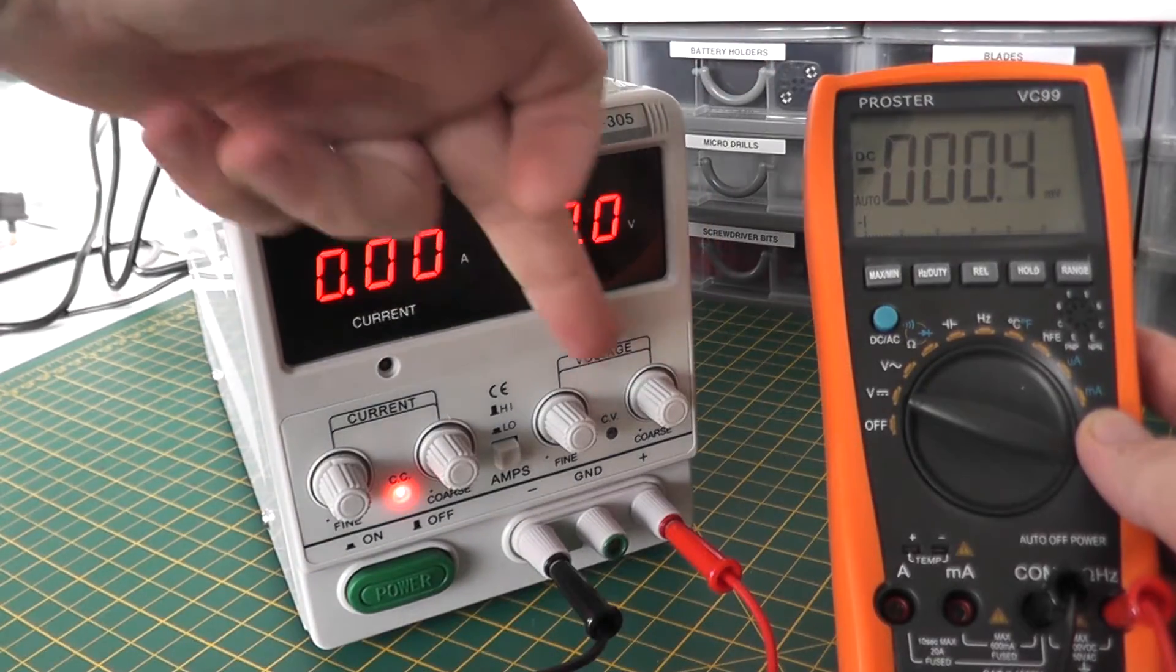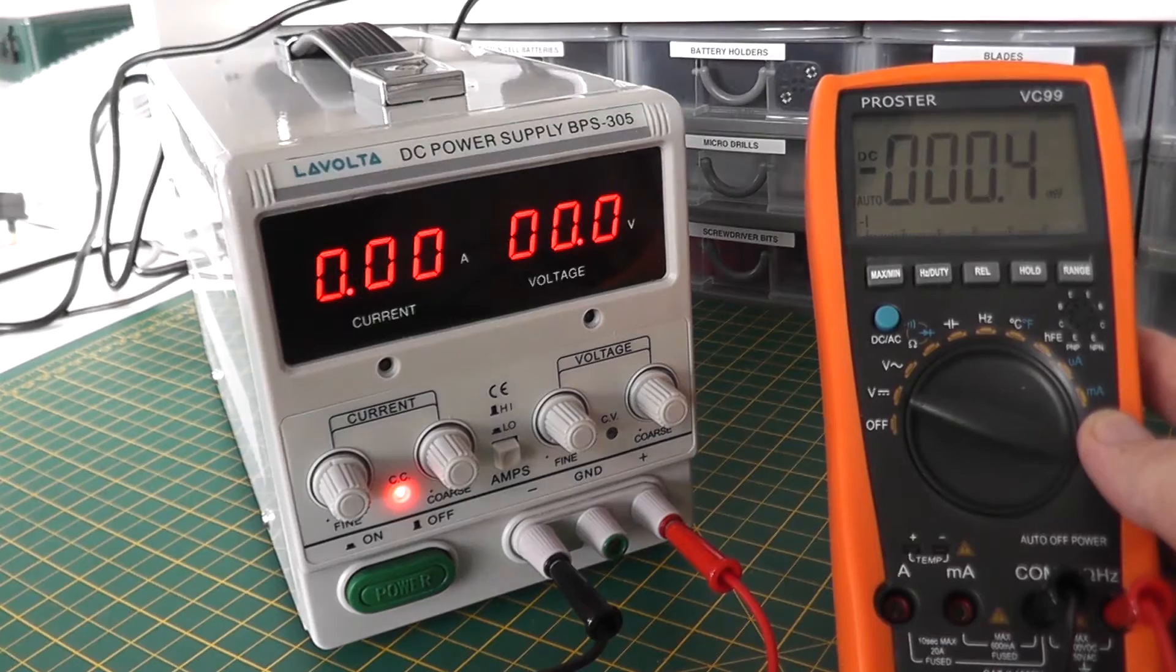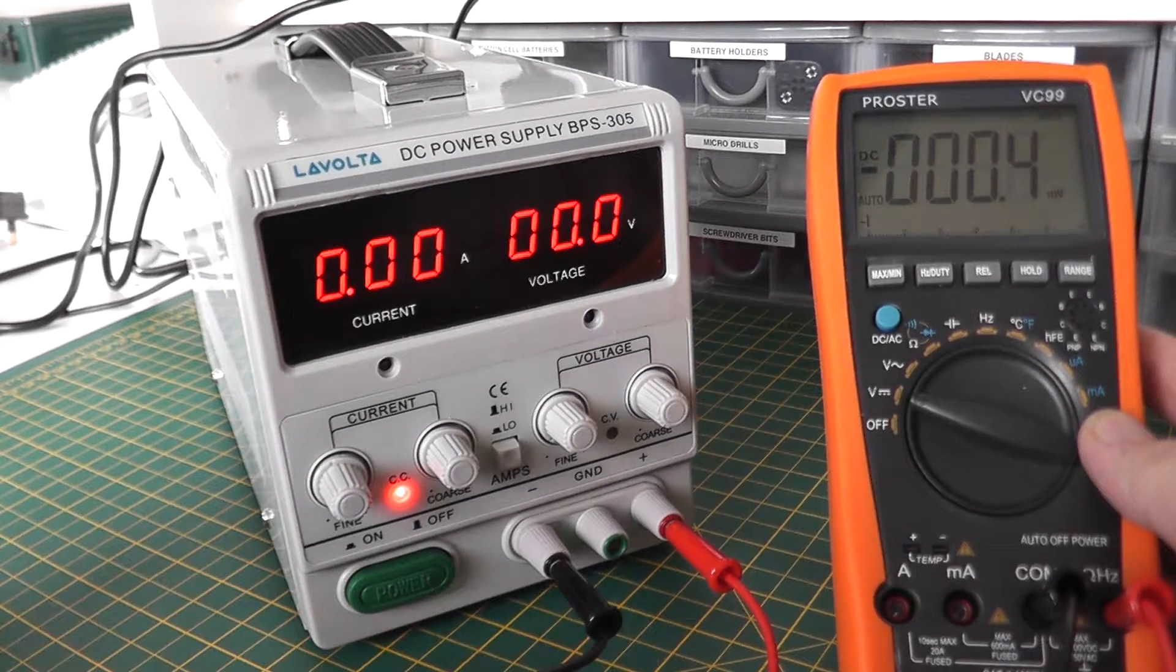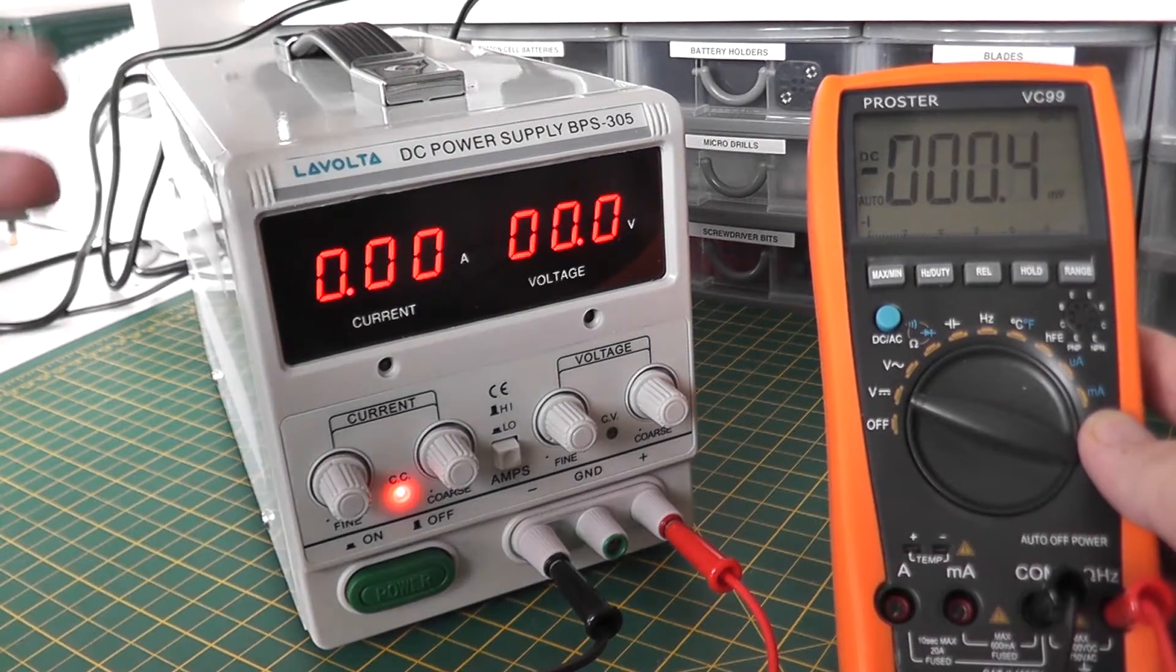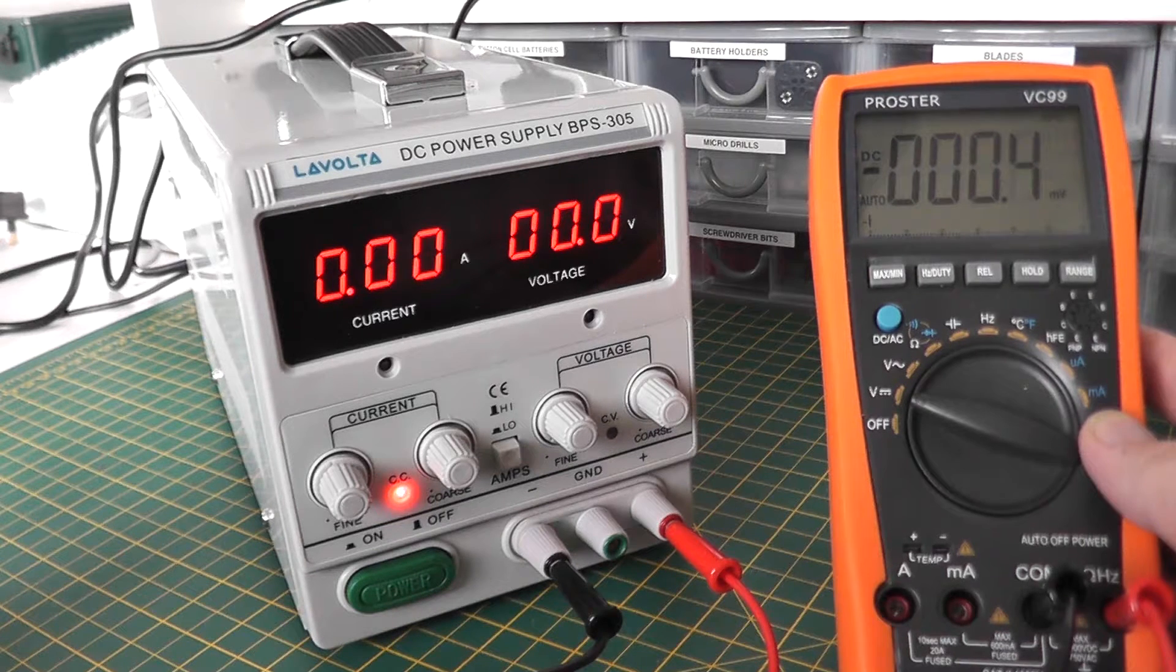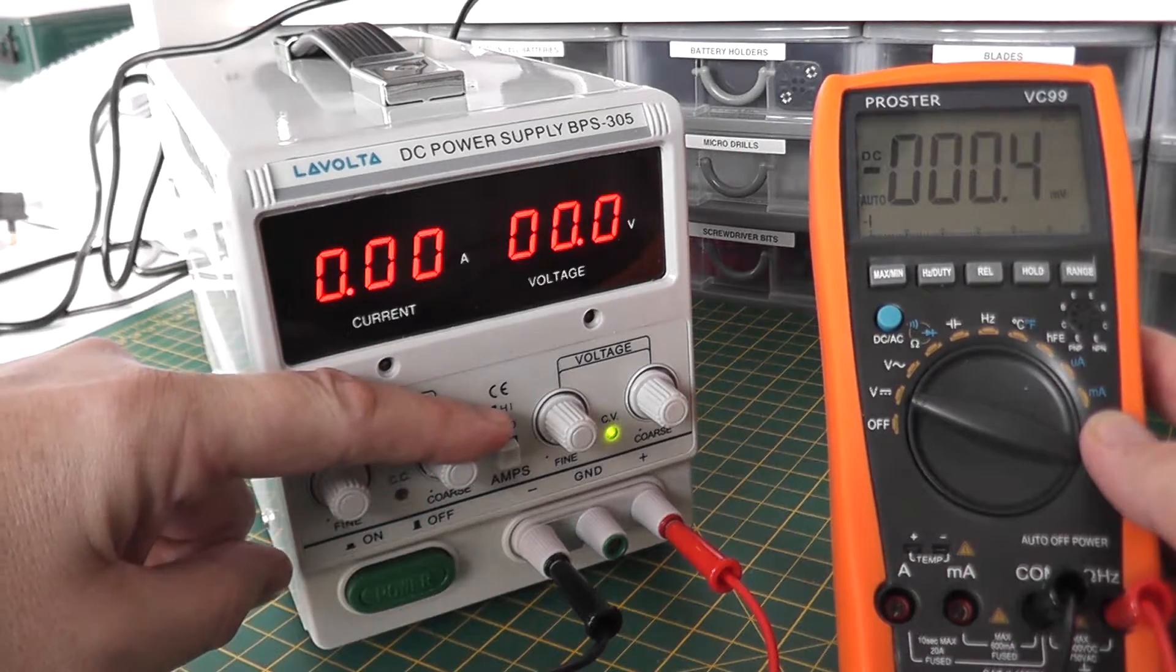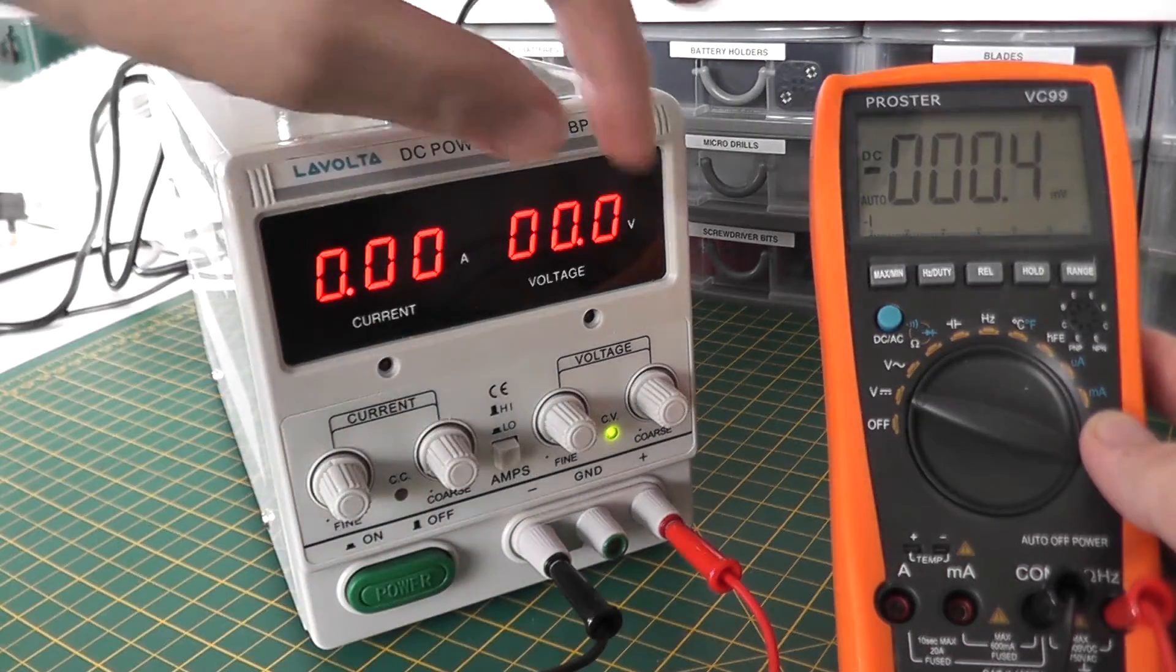As I've said there are two controls, a coarse control and a fine control. Basically the coarse control increases the voltage in larger steps and the fine control allows you to fine tune those steps to a more accurate voltage. So let's apply a little bit of current, not very much but a little bit, and let's turn the voltage.